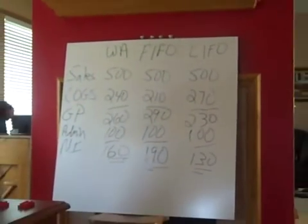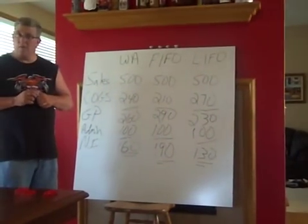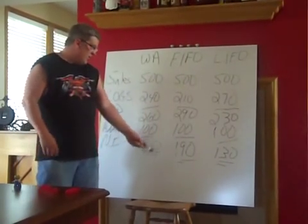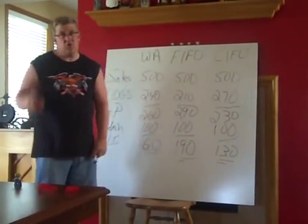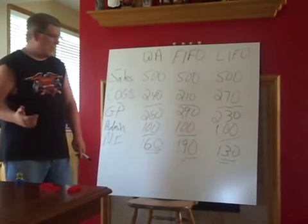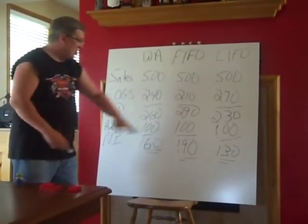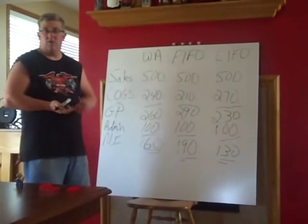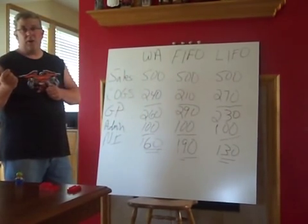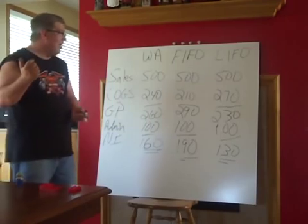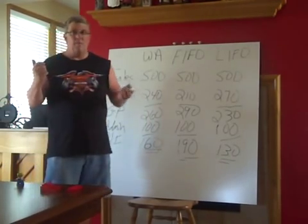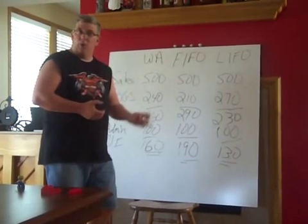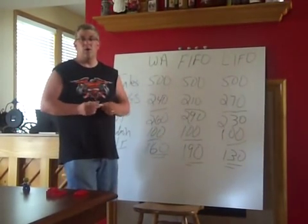So you can see, based on which inventory method we used, we had a difference of $60 — and that was just in our very small example of 15 items. We had a $60 difference in net income just based on what costing method we used. As you can tell, when you multiply that at a big company by millions of items sold, what inventory method we use does play a big difference. So that's why it's important.